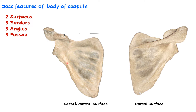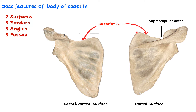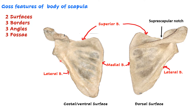Now let us look at the borders of the scapula. There are three borders. First is the superior border — on the lateral aspect of the superior border there is a notch, a depression known as the suprascapular notch, present in the upper part of the scapula. The second is the medial border, which is a sharp border compared to the lateral border. The third is the lateral border, which is much more rounded than the medial border.